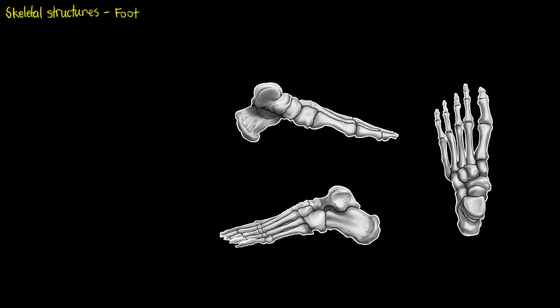Starting with our directional terminology here like always, so we know exactly what we are looking at. We have a superior view, so looking from above, a medial view, closer to the midline of our body with the big toe on the inside, and a lateral view, from the outer side of our body with our little toe on the edge.